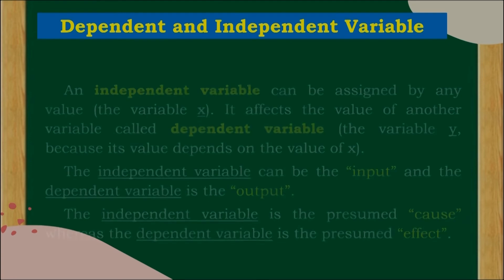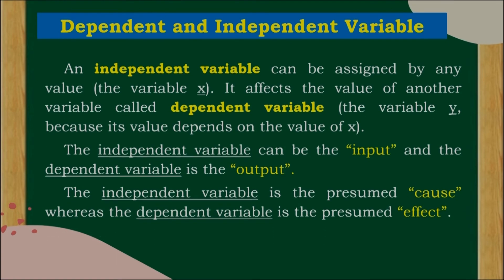Dependent and independent variable: an independent variable can be assigned any value — it is the variable x, and it affects the value of another variable called the dependent variable, which is the variable y, because its value depends on x. The independent variable can be the input and the dependent variable is the output. The independent variable is the presumed cause, whereas the dependent variable is the presumed effect.